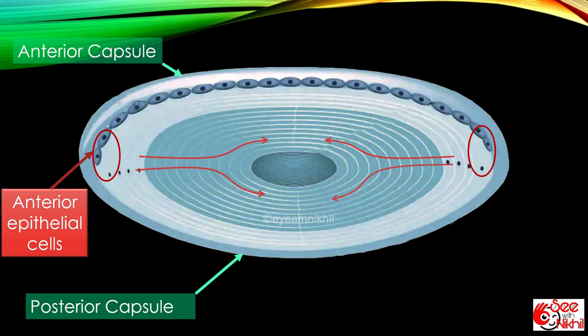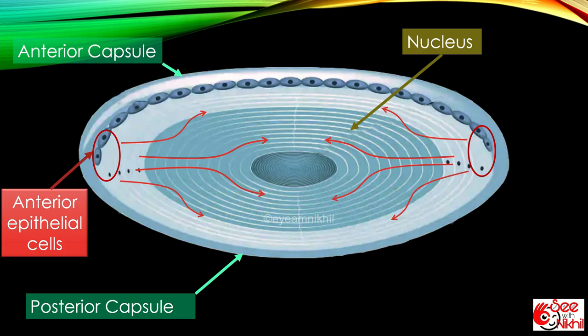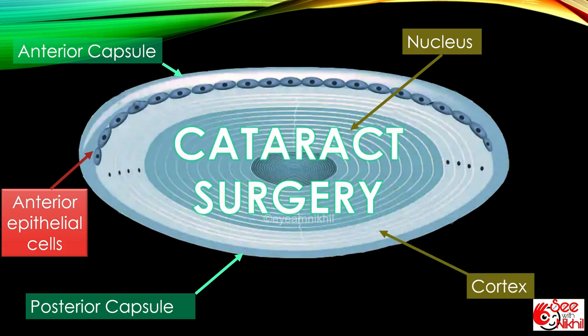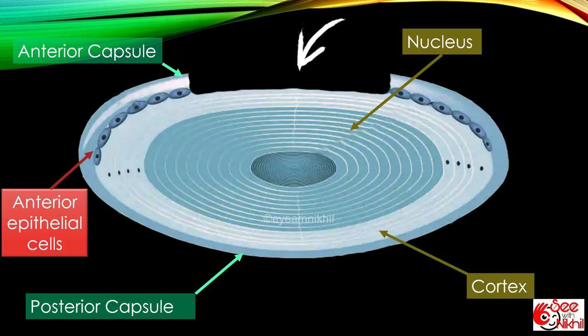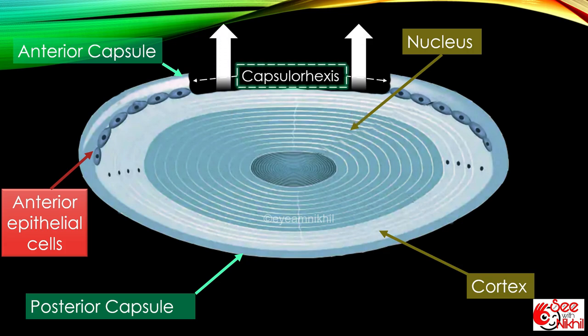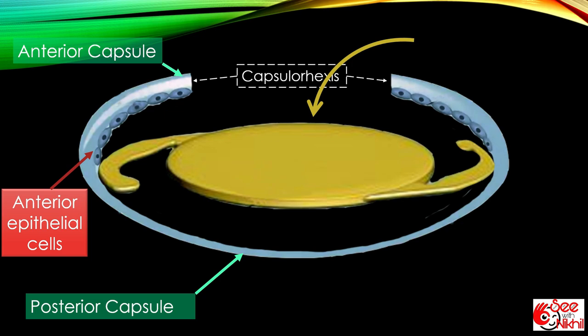During cataract surgery we create an opening in the anterior capsule known as capsulorhexis, remove the nucleus and cortex through this opening, and put an intraocular lens. As you can see, the posterior capsule and some part of anterior capsule and anterior epithelial cells are left behind.